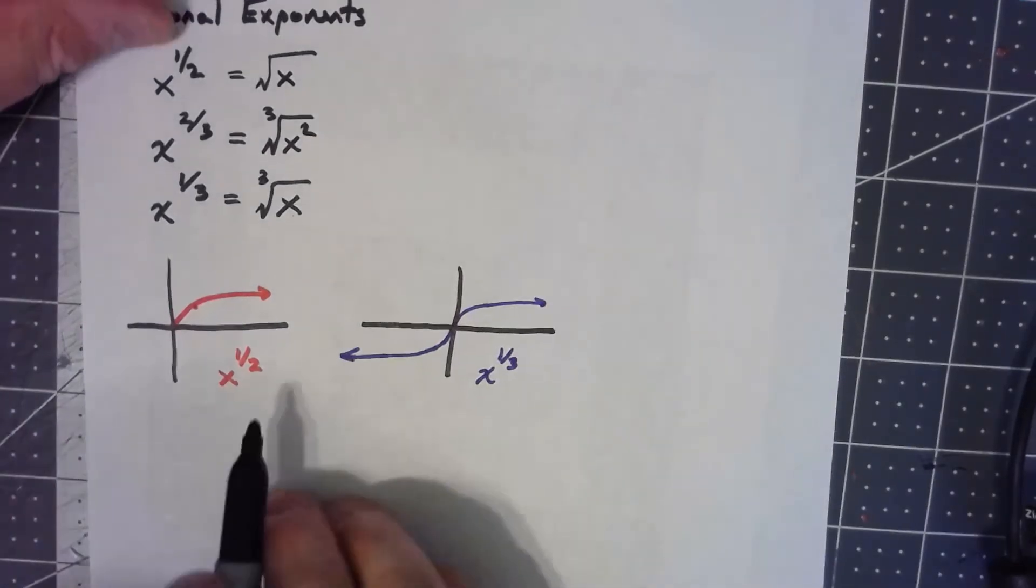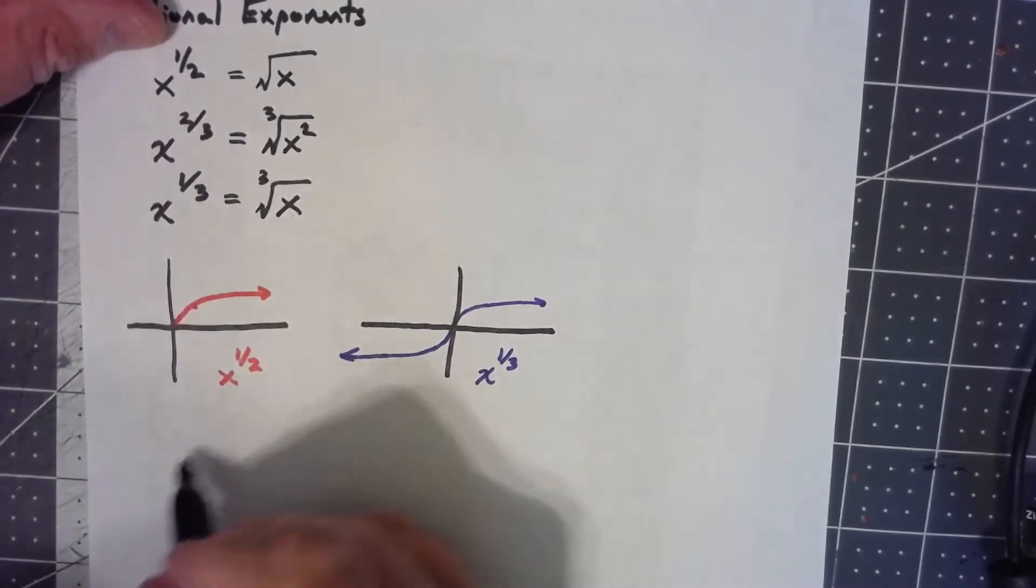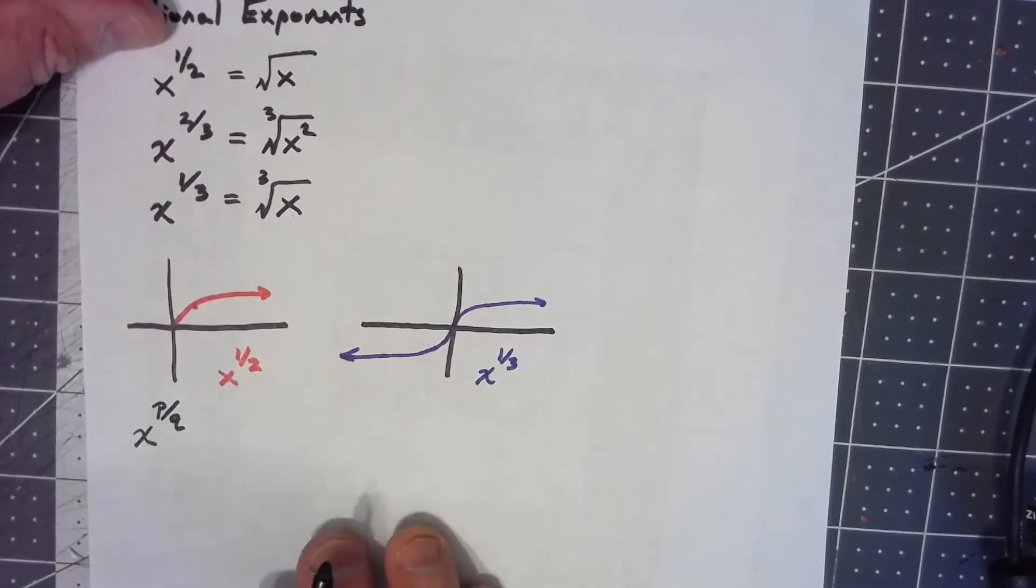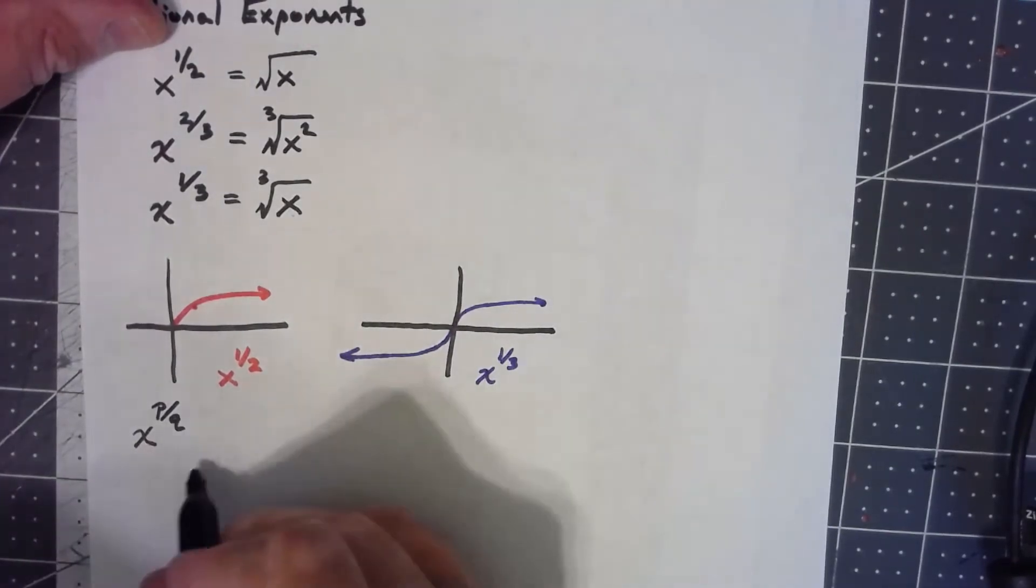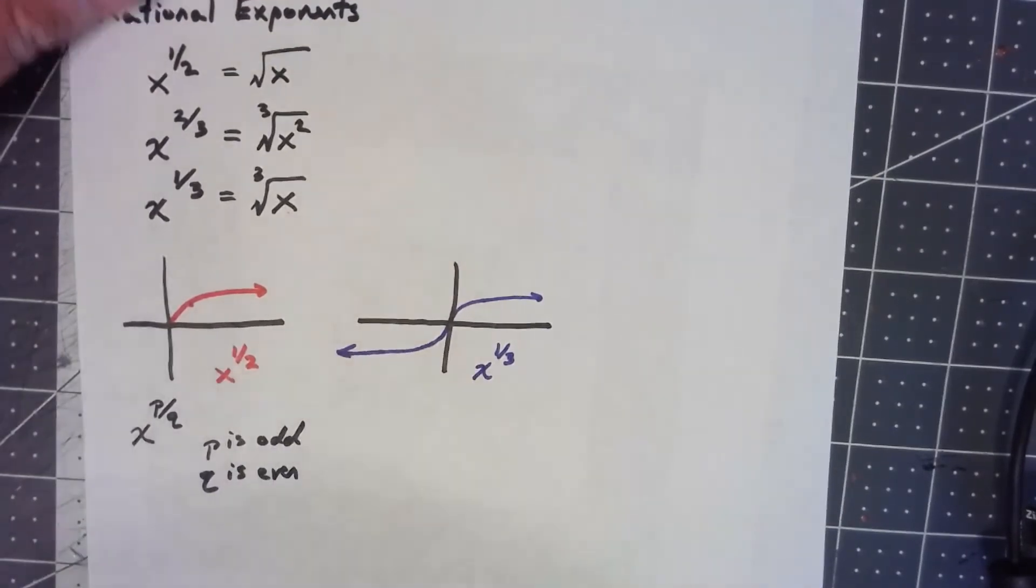In particular, this one here, any time when you've got x to a power that's a fraction, and p is odd and q is even, anytime the top of the fraction is odd and the bottom of the fraction is even, it's going to look like this.